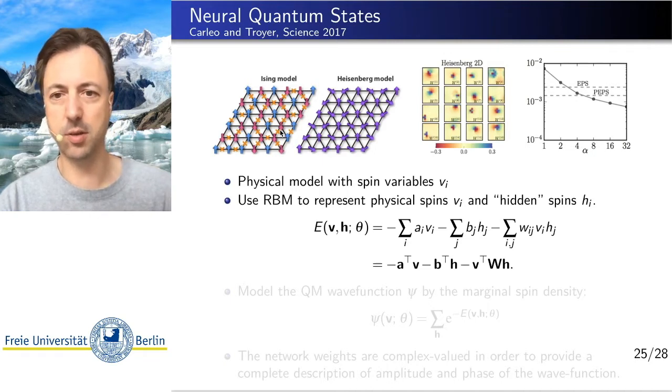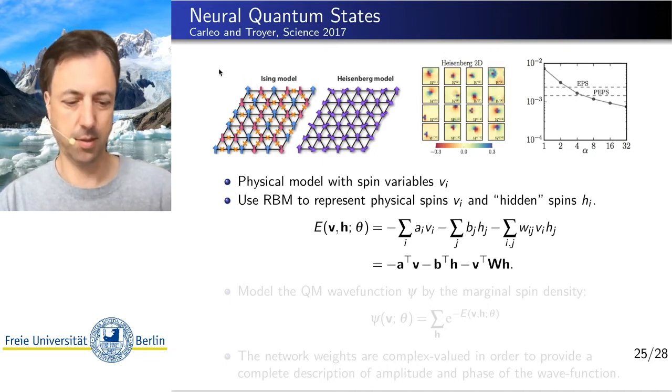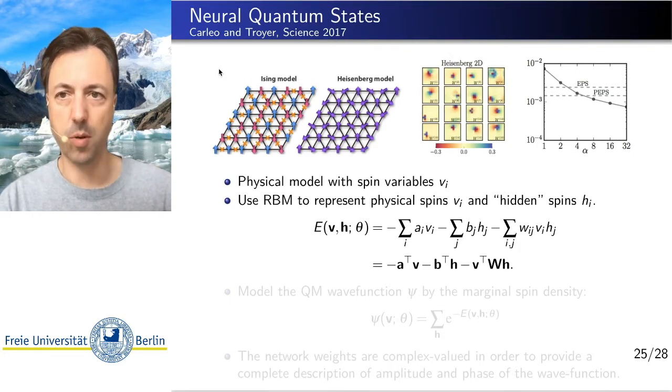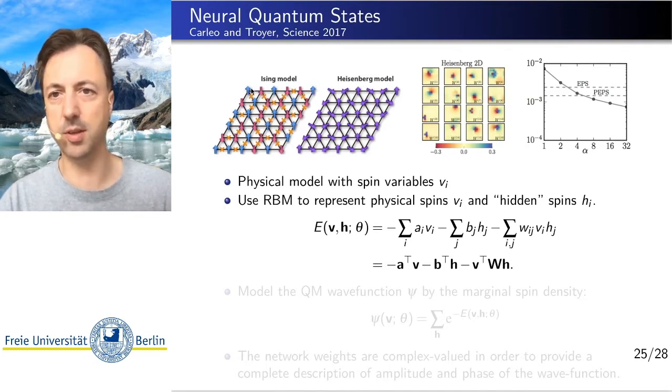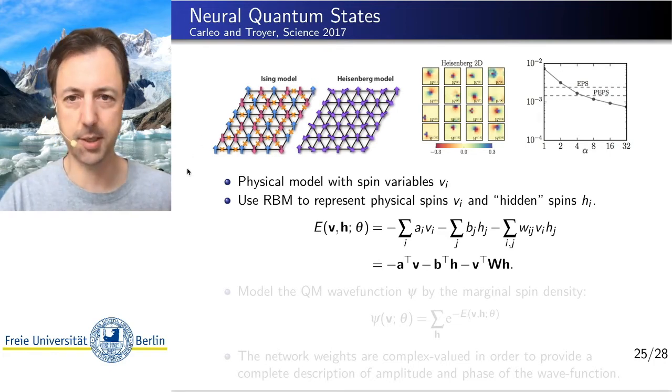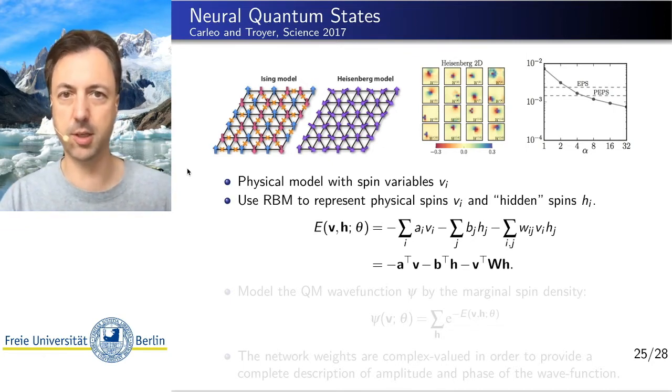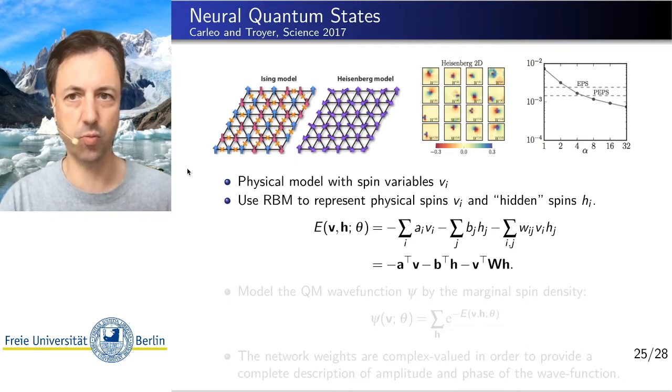Solving means we want to find the so-called wave function of the system. The wave function is a function which describes how probable every configuration of spins is. That is a function that is initially not known, it's not easy to compute, it cannot be analytically solved, and it's generally a hard problem to find these solutions.